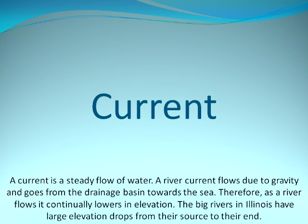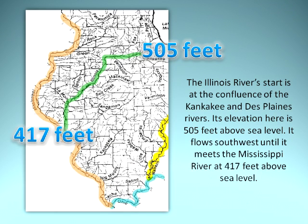Current: A current is a steady flow of water. A river current flows due to gravity and goes from the drainage basin towards the sea; therefore, as a river flows, it continually lowers in elevation. The Illinois River's start is at the confluence of the Kankakee and Des Plaines Rivers, where its elevation is 505 feet above sea level. It flows southwest until it meets the Mississippi River at 417 feet above sea level.